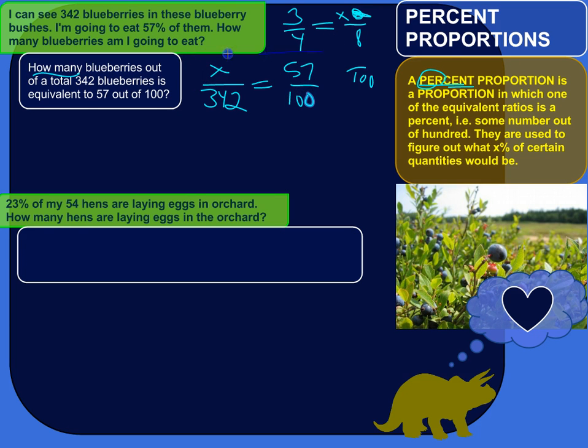All right, so we've set up our proportion here. Let's go ahead and solve it. The quickest way would be, it's kind of like a little shortcut. You cross multiply and then divide and kind of like cross multiply and then divide and boom, that's your answer.